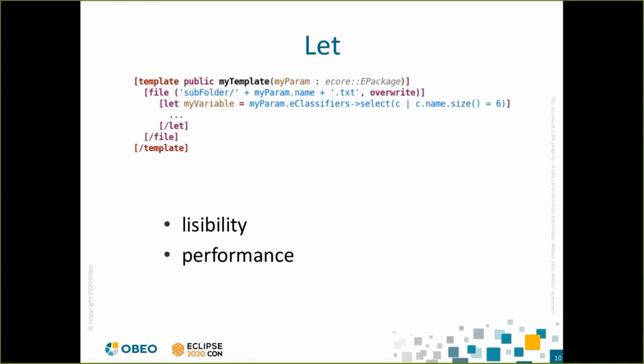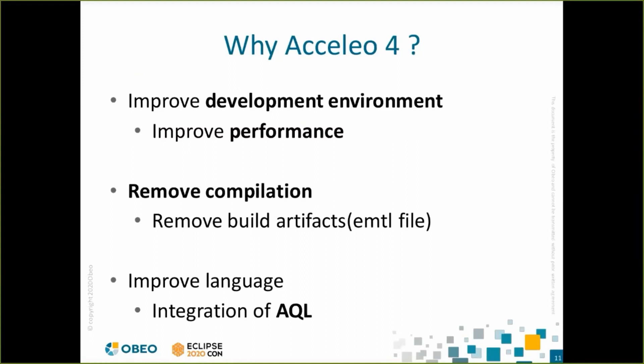We decided to write Acceleo 4 mainly because of performance issues in the development environment for large projects. In some cases, the development environment was not responding. The limit with Acceleo 3 was around 100 modules for 25,000 lines of code. We now can go over 300 modules and 300,000 lines of code. We also decided to get rid of the EMTL files, which are a compiled version. They tend to become very large and time-consuming to write and read. And we integrated AQL — Acceleo Query Language — which is already integrated in Sirius and M2Doc.